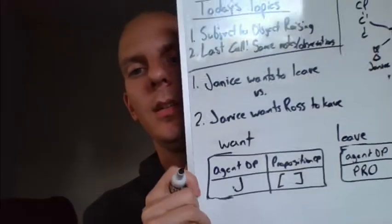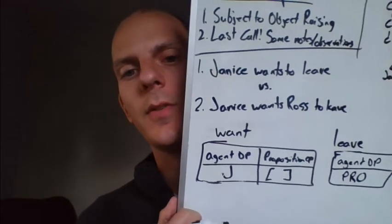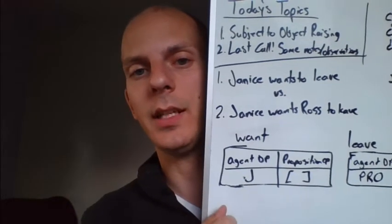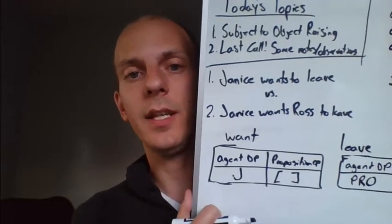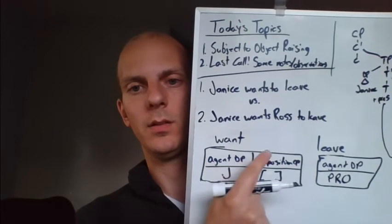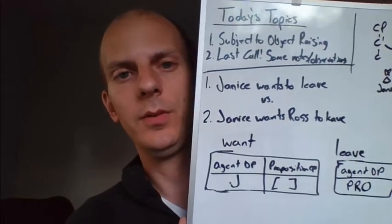And so what we do is use this thing called Big PRO - PRO. It's got a fantastic name. Big PRO is a pronoun that's co-indexed with Janice, so we get the correct semantic reading that Janice wants for herself to leave. But it saves our theta grid because it counts as an argument, giving us a one-to-one matching between all our arguments and our theta roles.